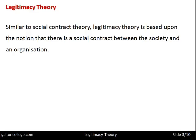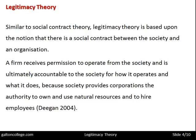There are two sides and both sides stand to benefit. There is a social contract between the society and the organisation. A firm receives permission to operate from the society and is ultimately accountable to the society for how it operates and what it does, because society provides corporations the authority to own and use natural resources and to hire employees. Society must want the organisations, and because the society grants permission to the organisations to exist, the organisations have accountability to the society.